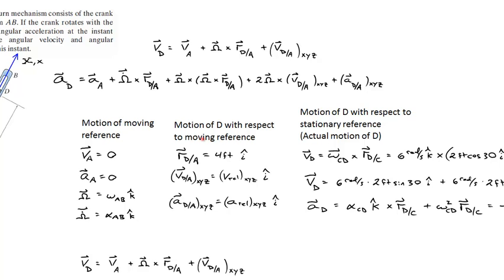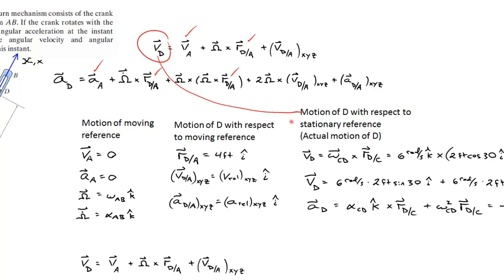Writing out these three columns helps me organize my thoughts to figure out different terms to plug into the two equations. I know the velocity of A equals zero, acceleration of A equals zero, and I don't know capital omega but I know it acts only in the k-hat direction. We know the position of D relative to A, and we know the velocity of D with respect to A in the moving coordinate system acts only in the i-hat direction. The third thing we need is the velocity of D with respect to a stationary reference — the actual motion of point D.